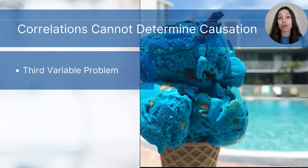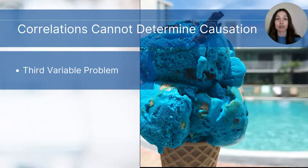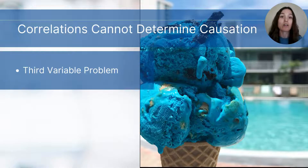The third variable problem may reveal that ice cream sales and drowning incidents are not directly related — the third variable, variable C, is hot weather. As hot weather increases, so do ice cream sales and the number of people swimming, which in turn can increase the risk of drowning. This is the third variable problem, which reminds us we cannot determine causation from correlational studies.